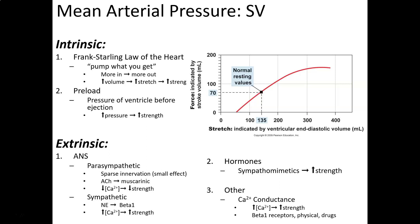The sympathetic system plays a major role in stroke volume. It releases norepinephrine to beta-1 receptors, which increases calcium entry into the cell. More calcium means more cross-bridge formation, which increases the strength of contraction and therefore stroke volume.